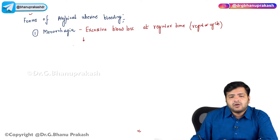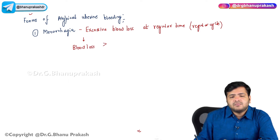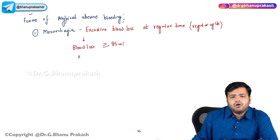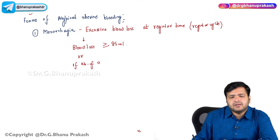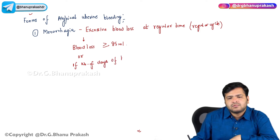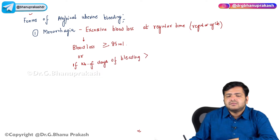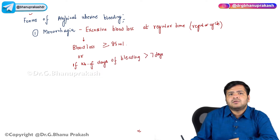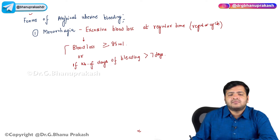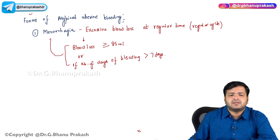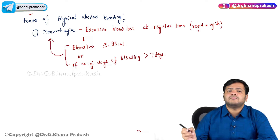If the blood loss is more than or equal to 85 ml, or if the number of days of bleeding is more than seven days, then it is called menorrhagia.